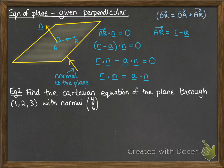We want to find the Cartesian equation of the plane through 1, 2, 3 with the normal of 4, 5, 6. You'll see this is really easy to do once you've got these bits of information in this equation.